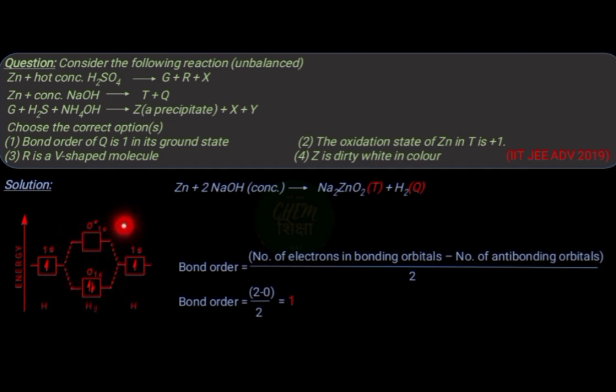the bond order is found to be 1. We can avoid this calculation and save time by simply having knowledge about the structure of a molecule. As bond order is the number of bonds between two atoms in a molecule, in hydrogen molecule there is only one bond between two hydrogen atoms, so the bond order is 1.